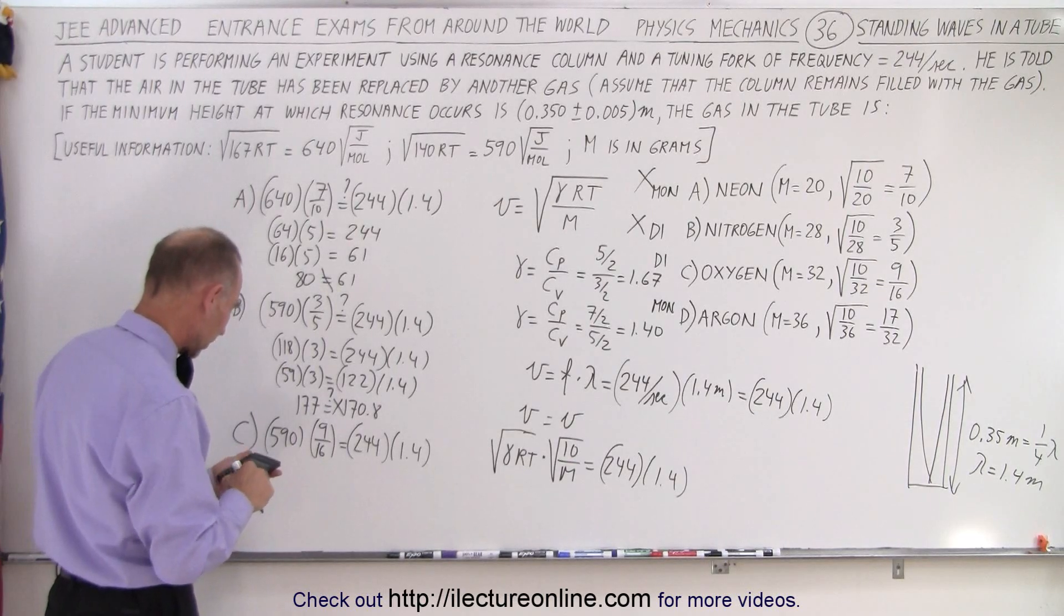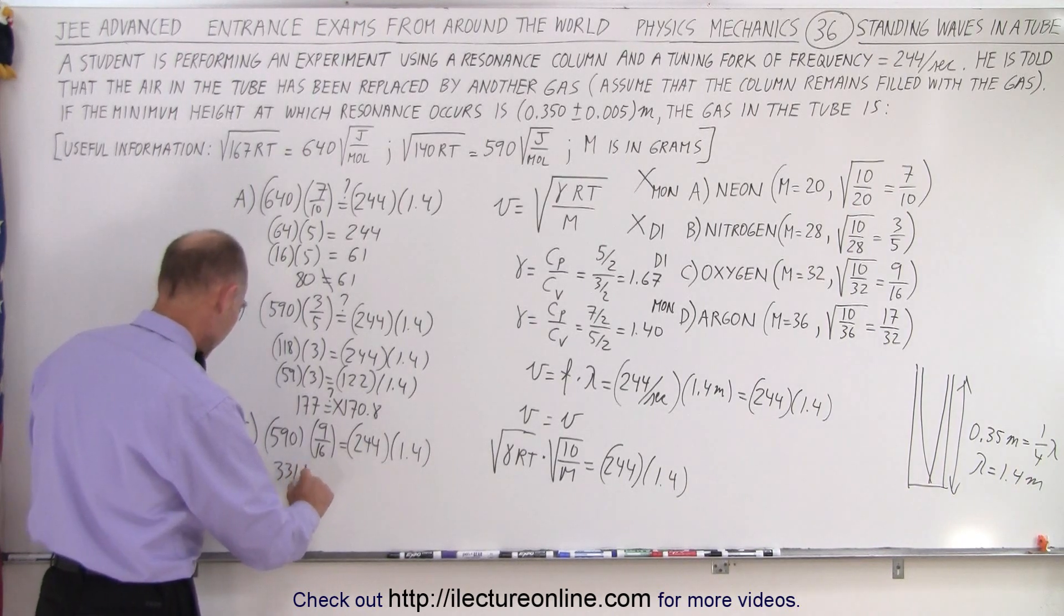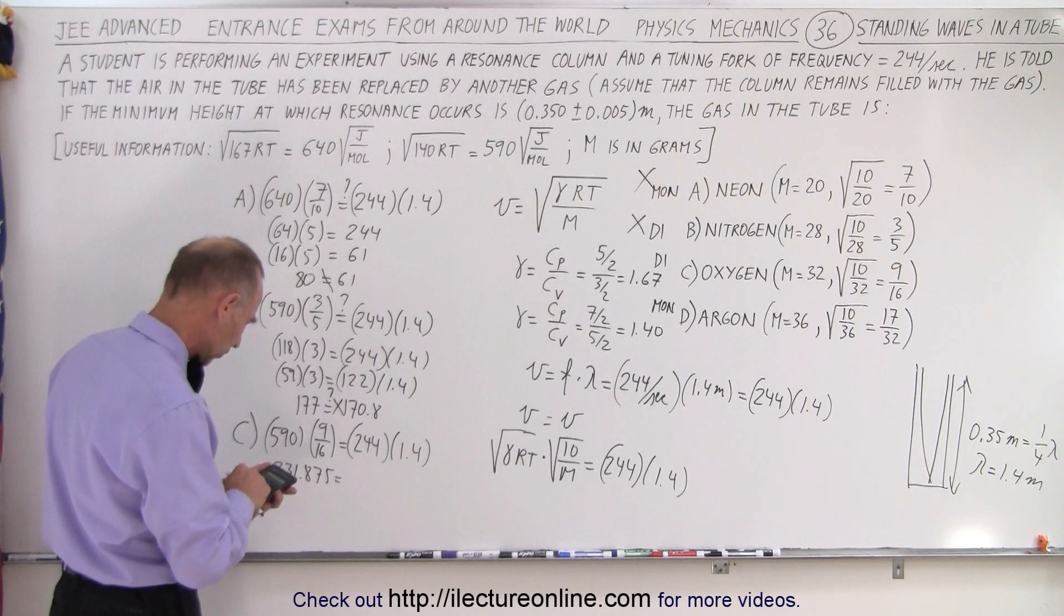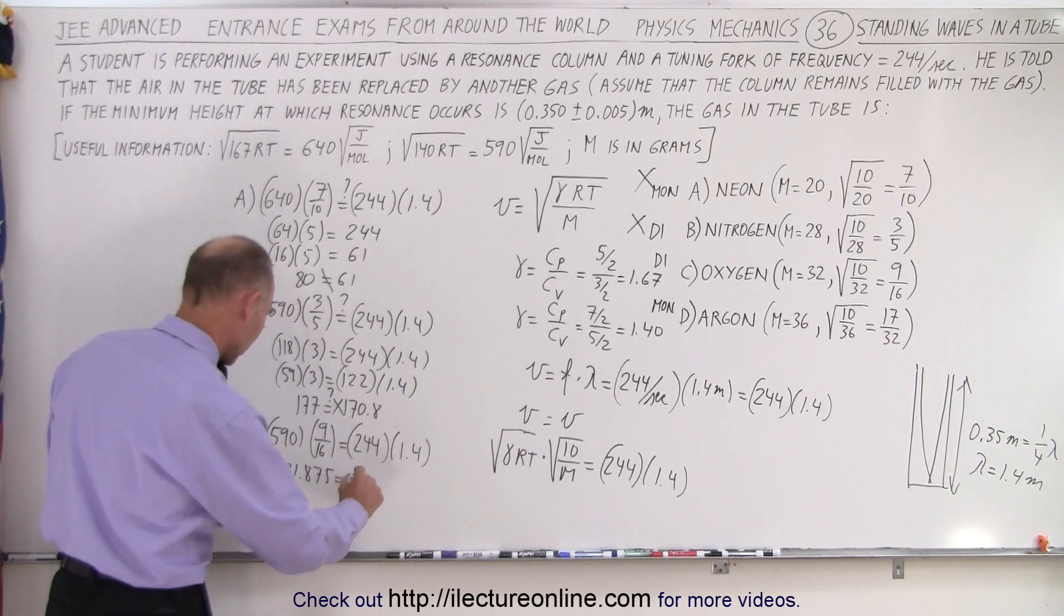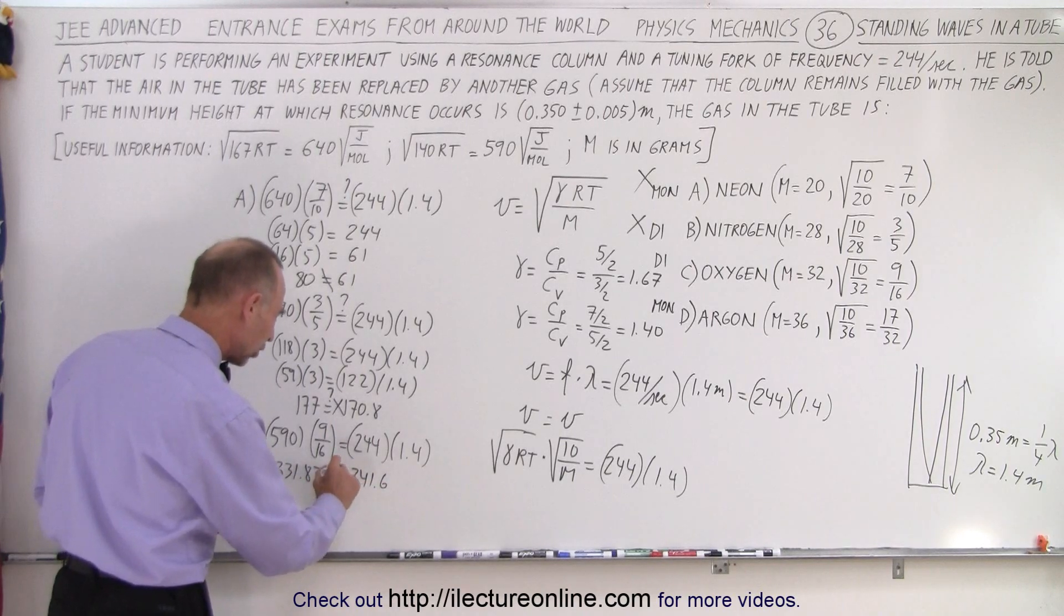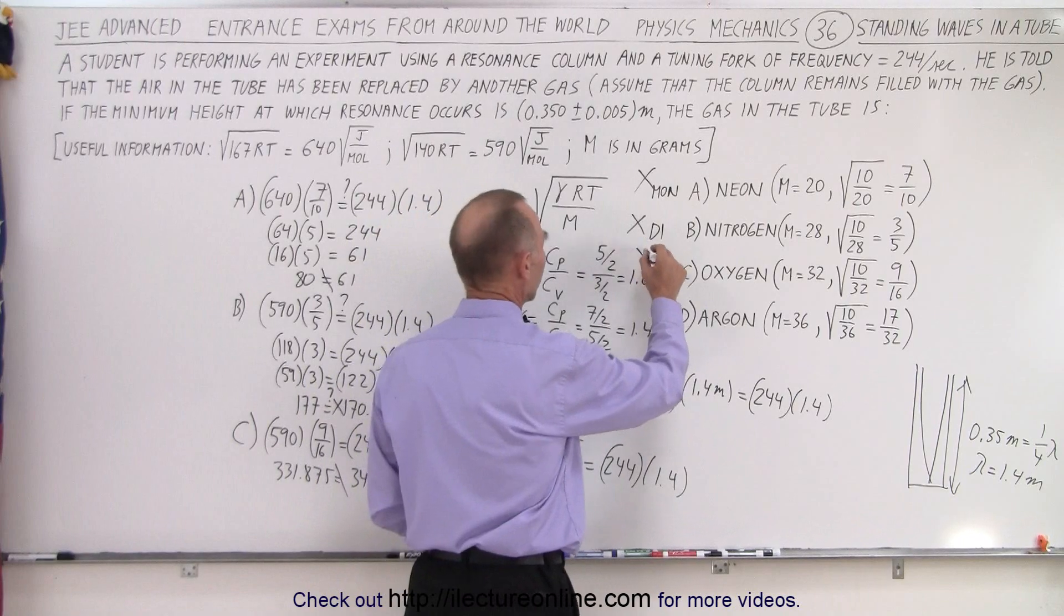To save time, I'm going to quickly work it out with a calculator. 590 divided by 16, I get 331.875 on the left side. 244 times 1.4 equals 341.6 on the right side. Notice it's not close enough, so they're not equal. That means C is also not an answer.